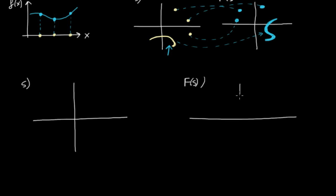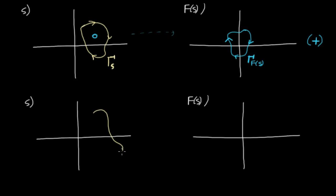The principle shows that if a closed trajectory, which will denote as capital gamma s, is passed to the function f and such function has a zero inside the area encompassed by the trajectory, then the image trajectory, denoted as capital gamma f, will encircle the origin in the same direction as gamma s. We say then that there has been a positive encirclement of the origin.